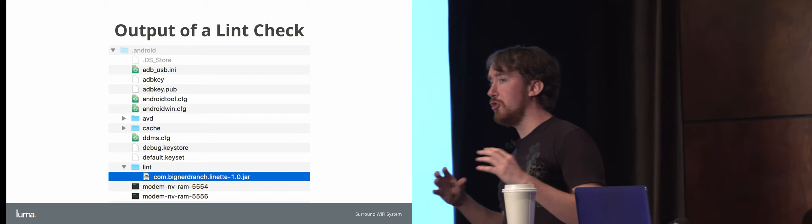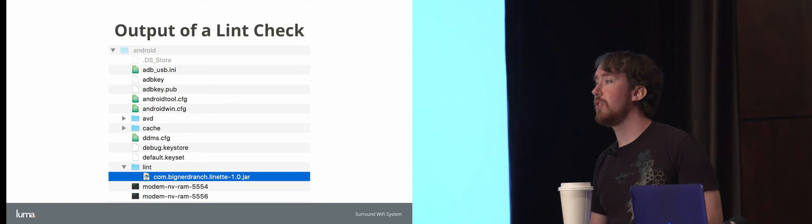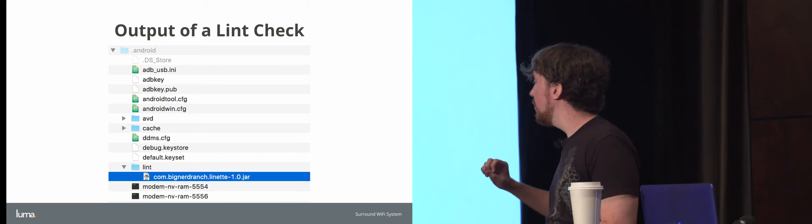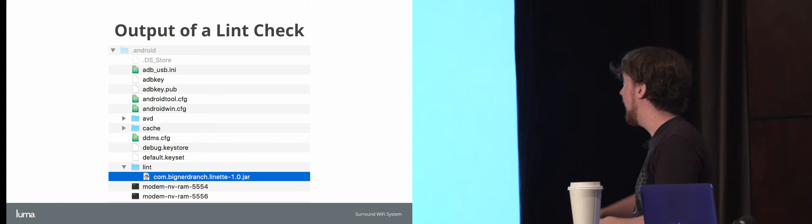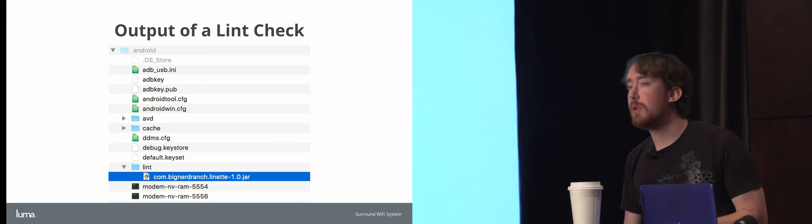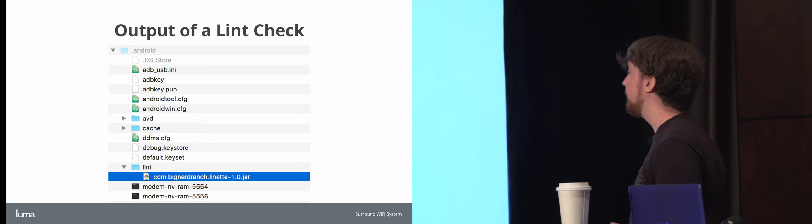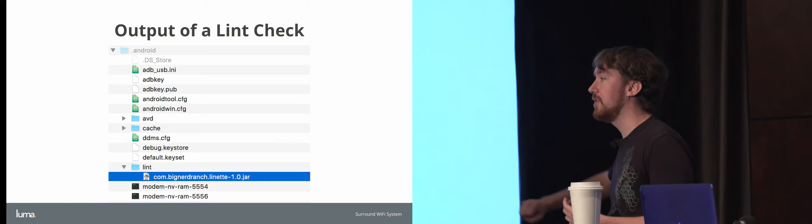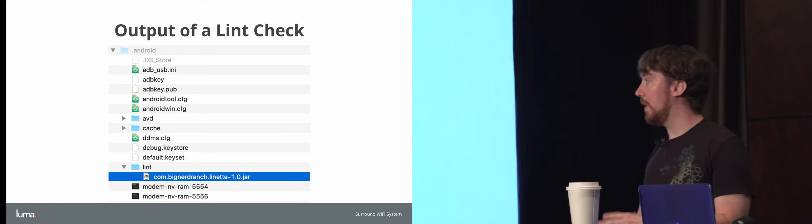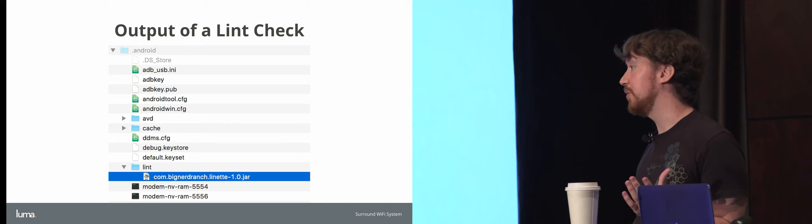Once we've built our Lint check and generated it, it ends up being a JAR. That JAR will contain your registry and your detector logic. Wherever you put this JAR, it will hopefully be included in your path. I just stick mine in the .android folder in my home directory, in the lint subfolder — it should be provided for you by default and will probably be empty unless you've done Lint work before. You can stick it locally on your machine, or throw it into continuous integration so it's used by your entire team.